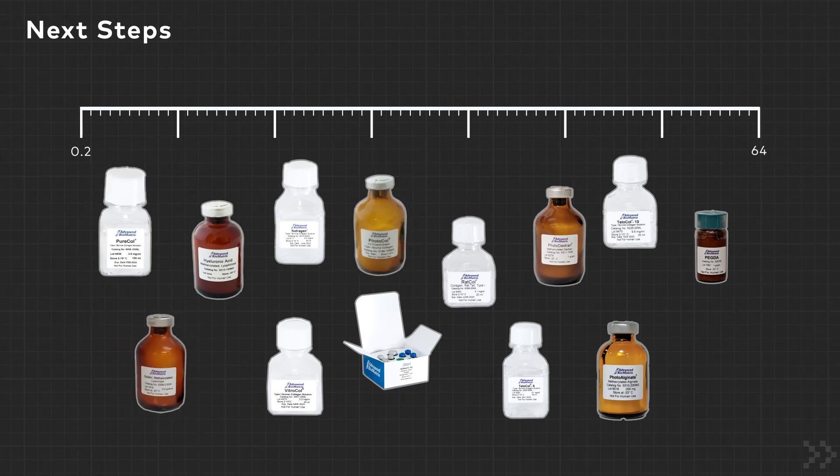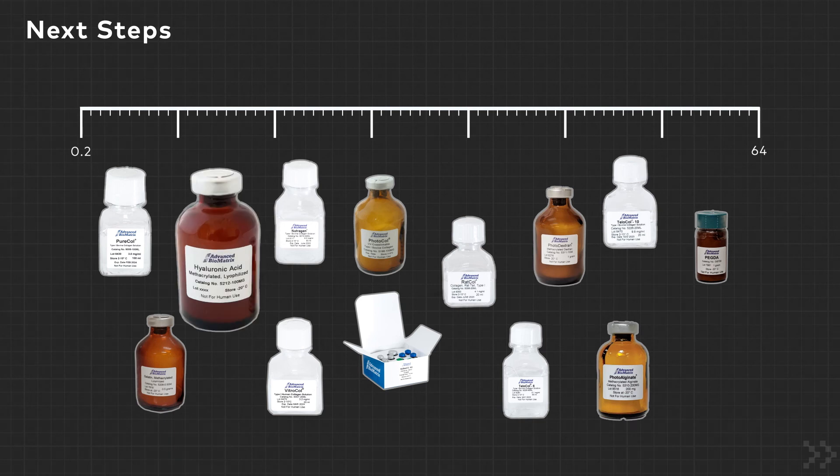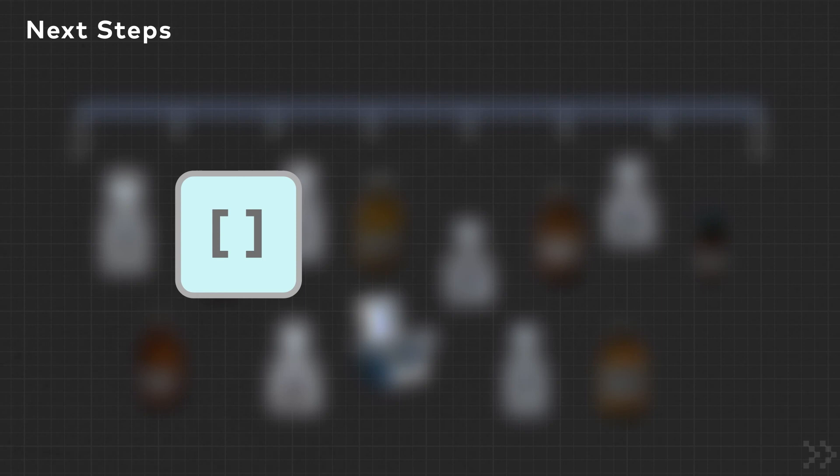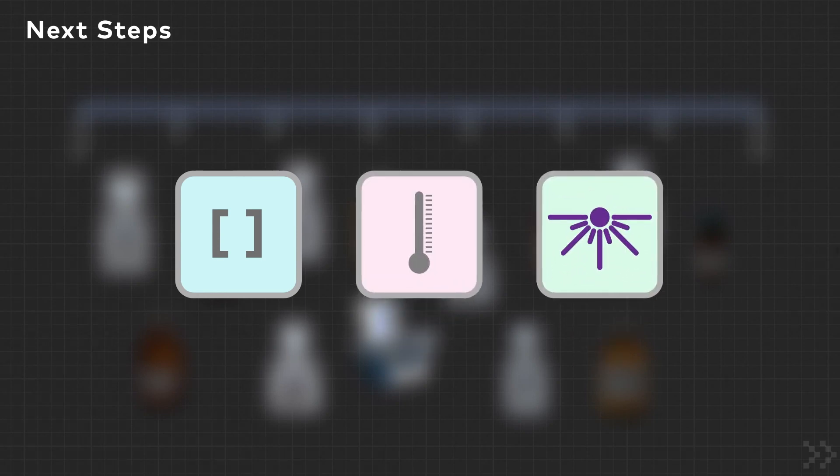These hydrogels include materials such as collagen, methacrylated collagen, gelatin, alginate, dextran, PEGDA, hyaluronic acid, and phylated hyaluronic acid, and they can be tuned by adjusting concentration, temperature, or photocrosslinking parameters.